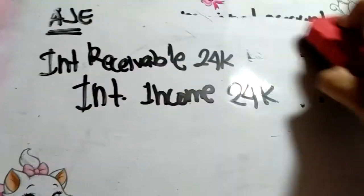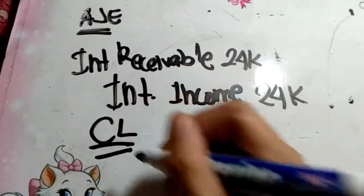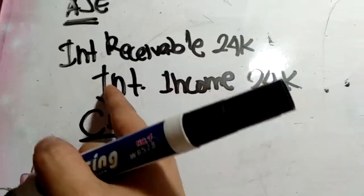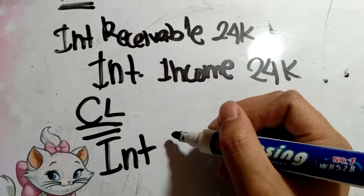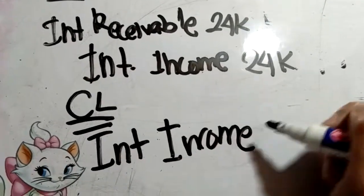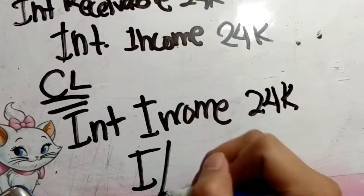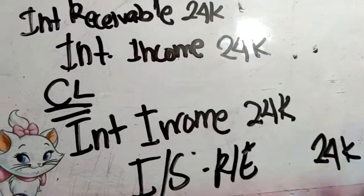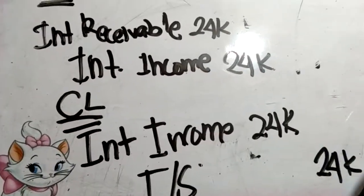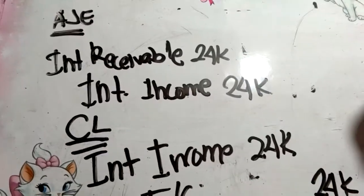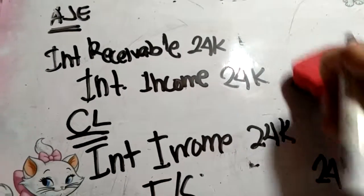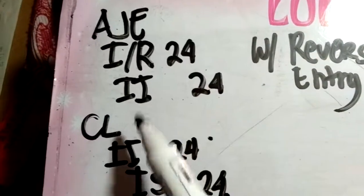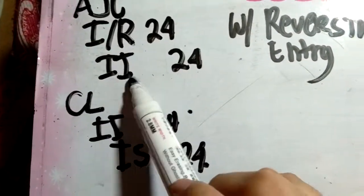After the adjusting entries at the end of the year, closing entries are mandatory. The closing entry — you remember the income summary. So we're going to close interest income to the income summary. Sometimes companies don't use income summary, they use retained earnings, but let's just do income summary. So the adjusting entry is: Interest Receivable 24k, Interest Income 24k.